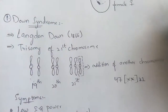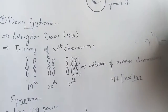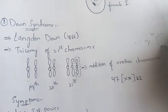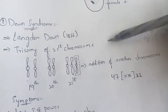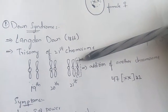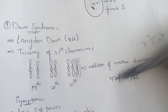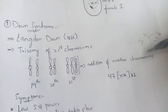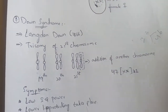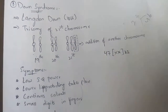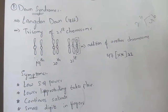So the total count becomes 47 chromosomes. Normally there are 23 pairs of chromosomes, which means 46 individually. But in Down syndrome, an additional chromosome is added, so what happens is 47 chromosomes. Addition of another chromosome at the 21st pair is known as Down syndrome.